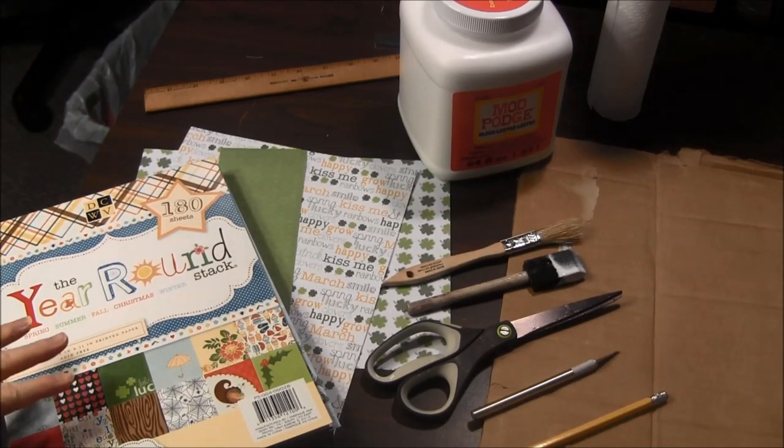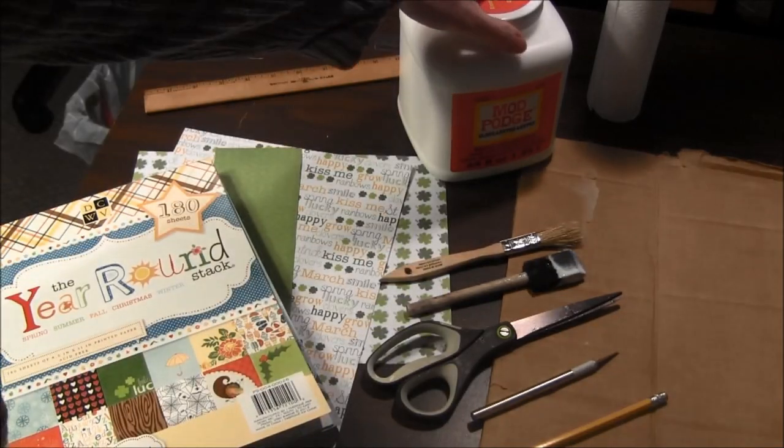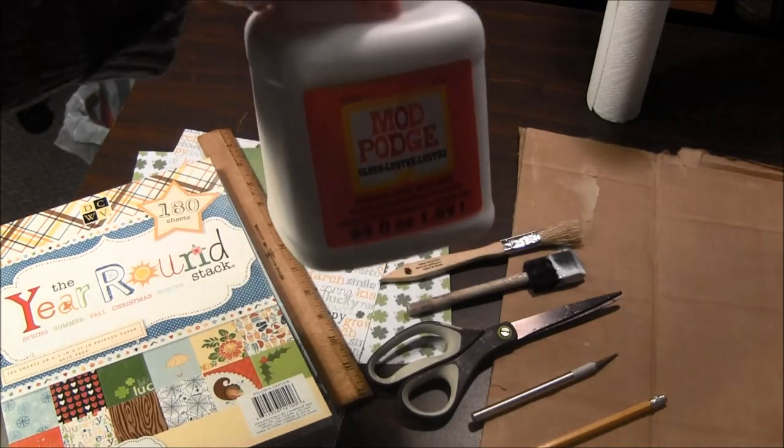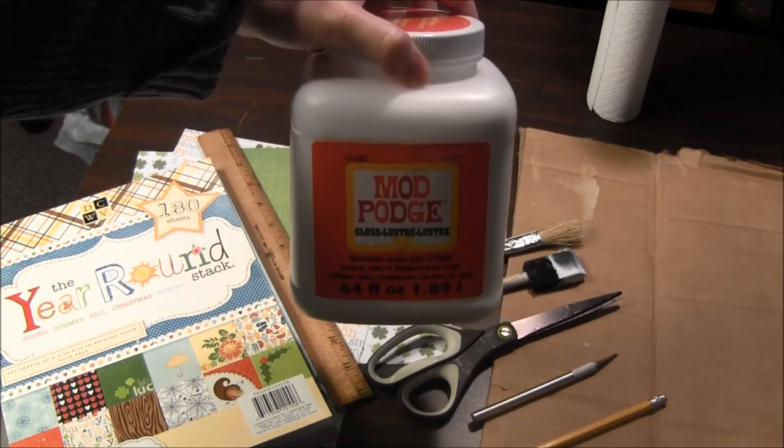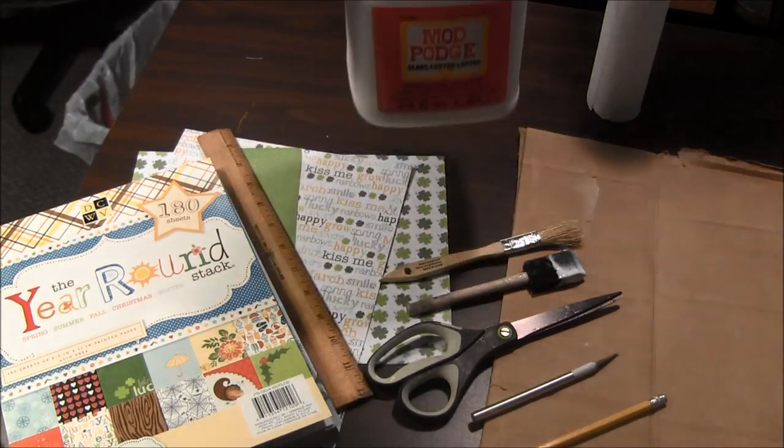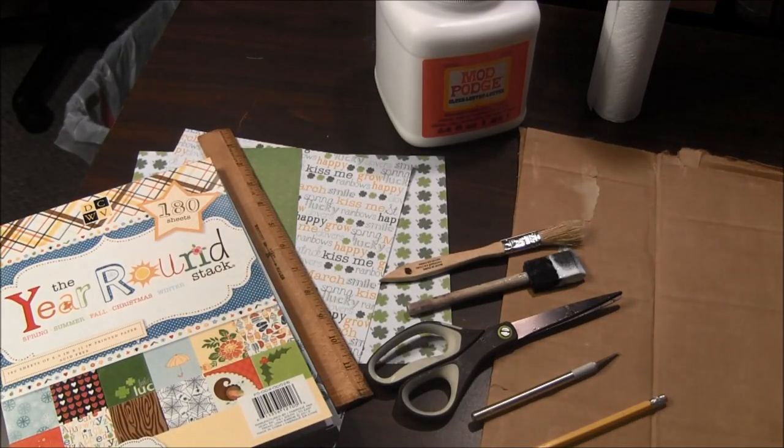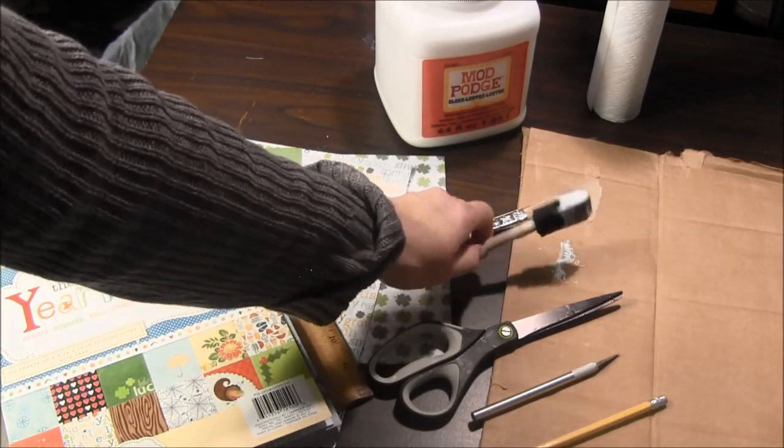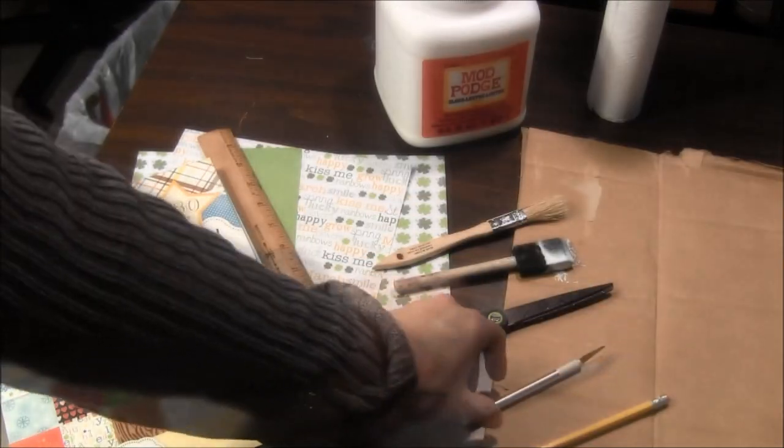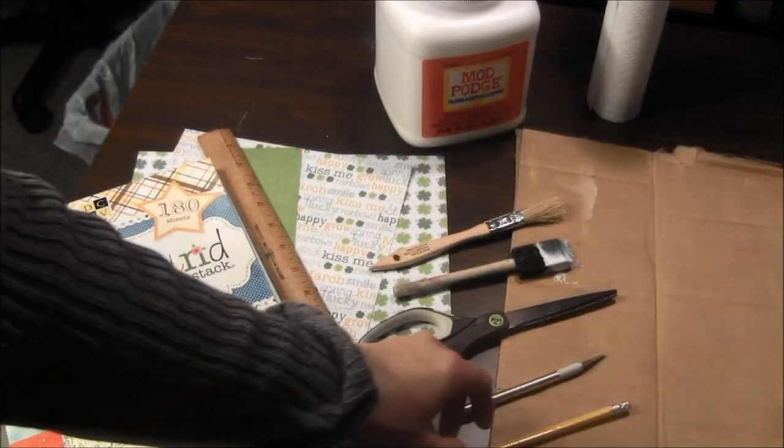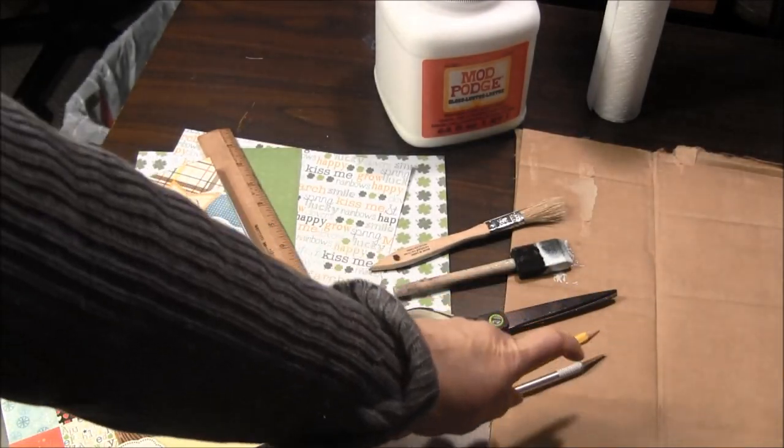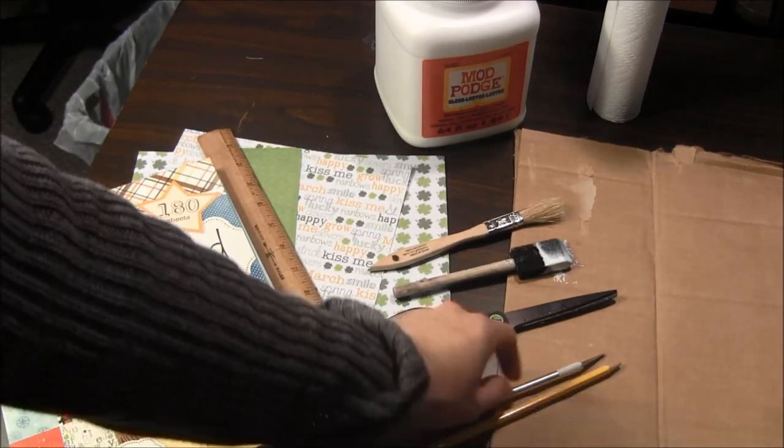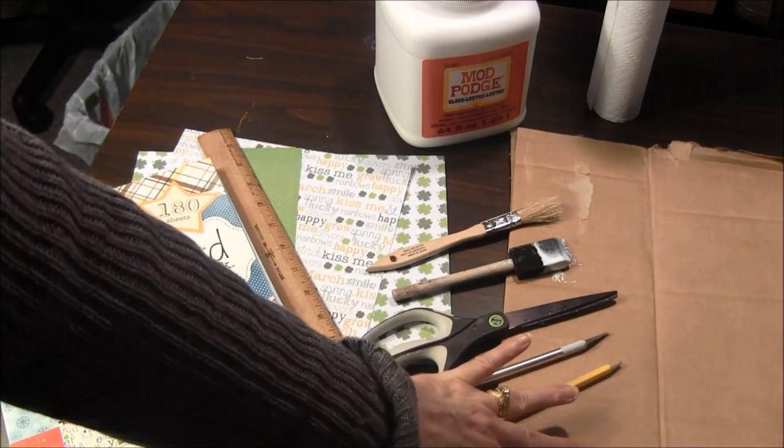For decoupaging, you will need some scrapbook paper, a ruler, some Mod Podge. This is a really big one. It comes in much smaller containers so you don't need to buy a huge one. You will need some brushes or a paintbrush or foam brush, scissors, an exacto knife, and a pencil. You'll also want to have a piece of cardboard that you can cut on with the exacto knife so you do not damage your table.